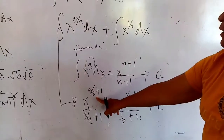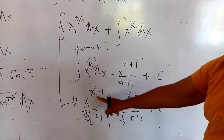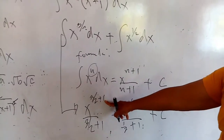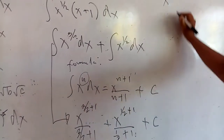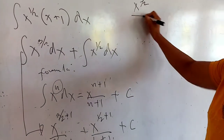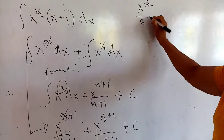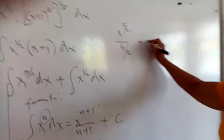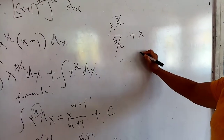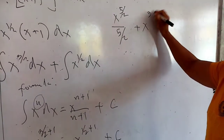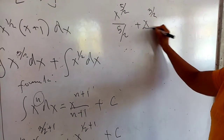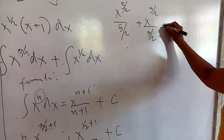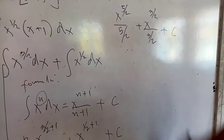x raised to the three-halves plus 1 — so that would be 2 times 1, which is 2 plus 3, giving us five-halves — divided by five-halves. Then plus x — one-half plus 1 will be raised to the three-halves — divided by three-halves, plus the constant of integration c.